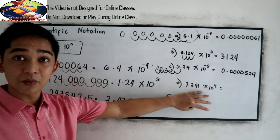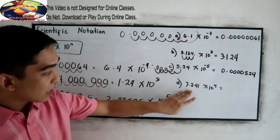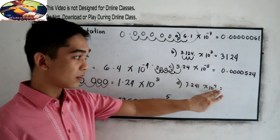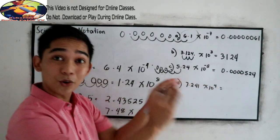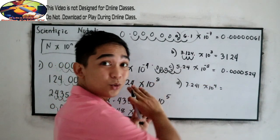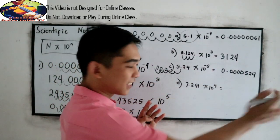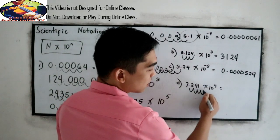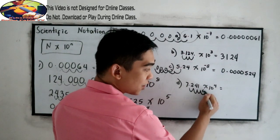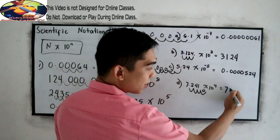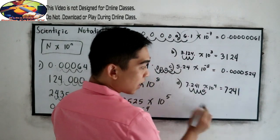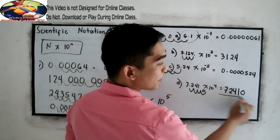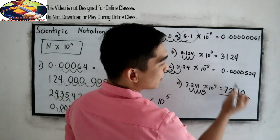Our last example: 7.241 times 10 raised to 4. Positive 4 — we move our decimal point to the right 1, 2, 3, 4 places, and add a zero. So 7, 2, 4, 1, 0 — giving us 72,410. These will be our answers.